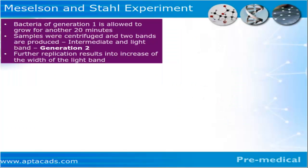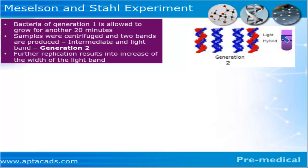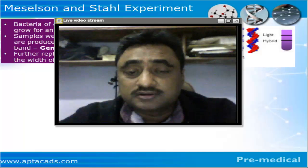When the same bacteria was allowed to grow further — Generation Two — the strands opened and since the new source is always N14, we got one medium band and one light band, as clearly visible in the diagram. Can you guess what is going to happen when the bacteria is allowed to grow further, say after 40 minutes, 60 minutes, or 80 minutes?